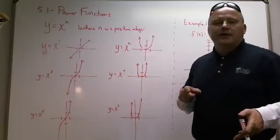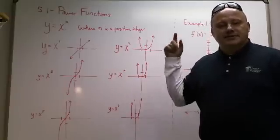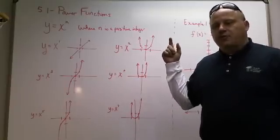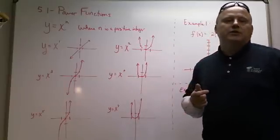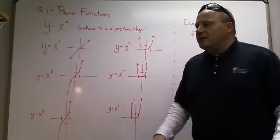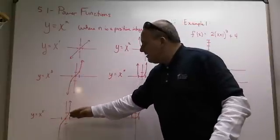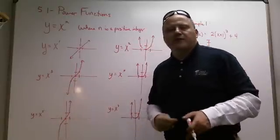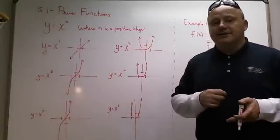On odd degree polynomials, they go in opposite directions. So what do you think y equals x to the 7th would look like? It would look like x to the 5th. How are these any different? Are they the exact same graph? No, they're not. They look the same, but they're not.